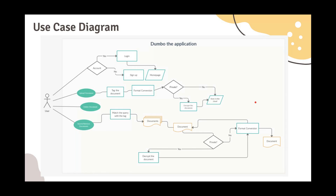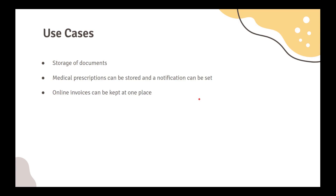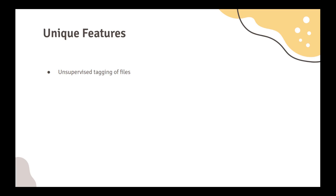Now coming to the use case diagram. This use case diagram is not complete, but it shows most of the features. As you can see, we have listed a few use cases in this slide and the list is very comprehensive. We are offering a whole array of unique features. Unsupervised tagging of files is a game changer — it changes the way we search for documents. Even the present leading cloud services do not encrypt documents, which poses a serious threat to user privacy. We are going to encrypt the files before storing them. A lot of files become obsolete after a certain time, so we set an automatic deletion time on documents if needed.